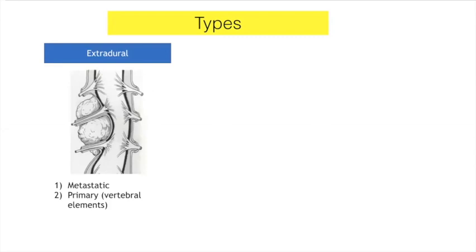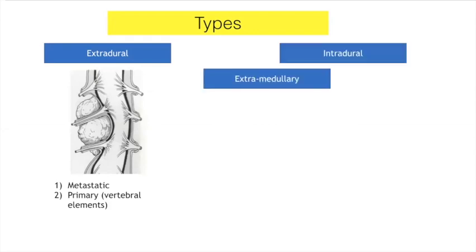Good morning everybody. This is Alekos Theologis, and I'll be talking on spinal tumors and reconstruction. To start off, you can think about tumors in terms of whether they're extradural — most commonly metastatic tumors versus primary tumors — or intradural tumors, which are within the dura. If a tumor is intradural, it can be subclassified into extramedullary (outside the spinal cord) or intramedullary (inside the spinal cord).